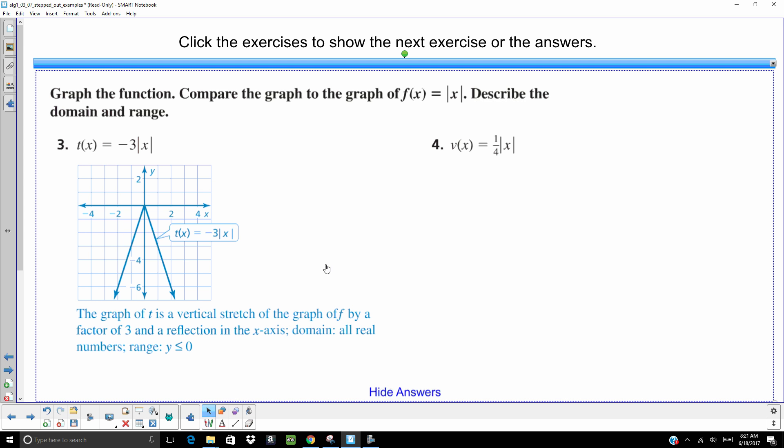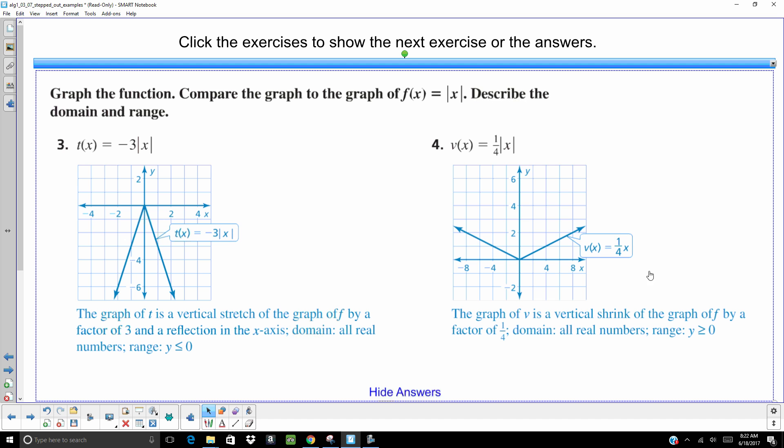That's going to be a slope of three, negative three and positive three. It's going to be a reflection. So it's been stretched by a factor of three. This one is a vertical shrink. I pushed down on it. And also my slope is up one right four. So my slope is one fourth.